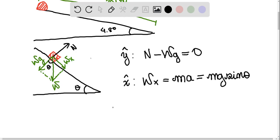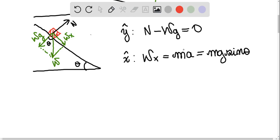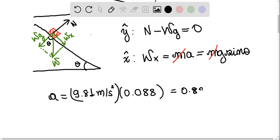So substituted by the values given by the exercise, and also notice that we can cancel out the mass of the car, we have that the acceleration is going to be 9.81 meters per second squared, times the sine of 4.8, which is 0.088, which is going to give us an acceleration of 0.82 meters per second squared.